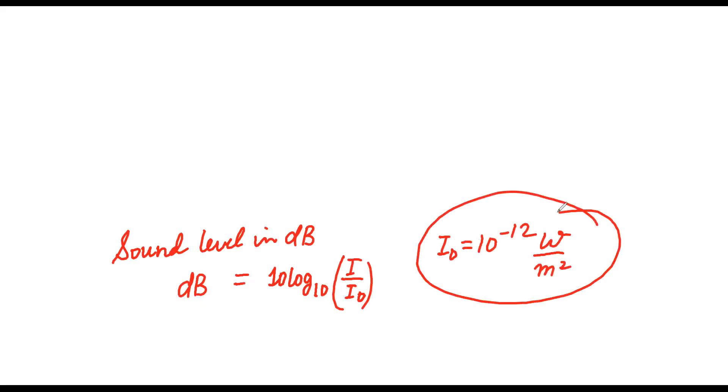If you have to measure sound level in decibels, this is how it is. It's a direct formula: 10 log to the base 10, I by I naught. I naught is fixed, it is a reference intensity. It is fixed at 10 to the power minus 12 watt per meter square. Now let's work.